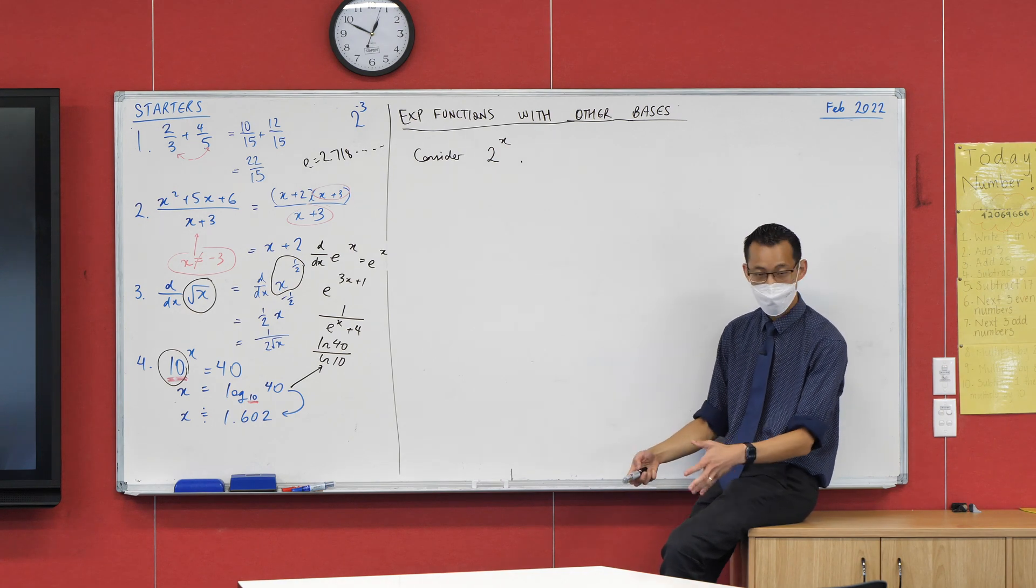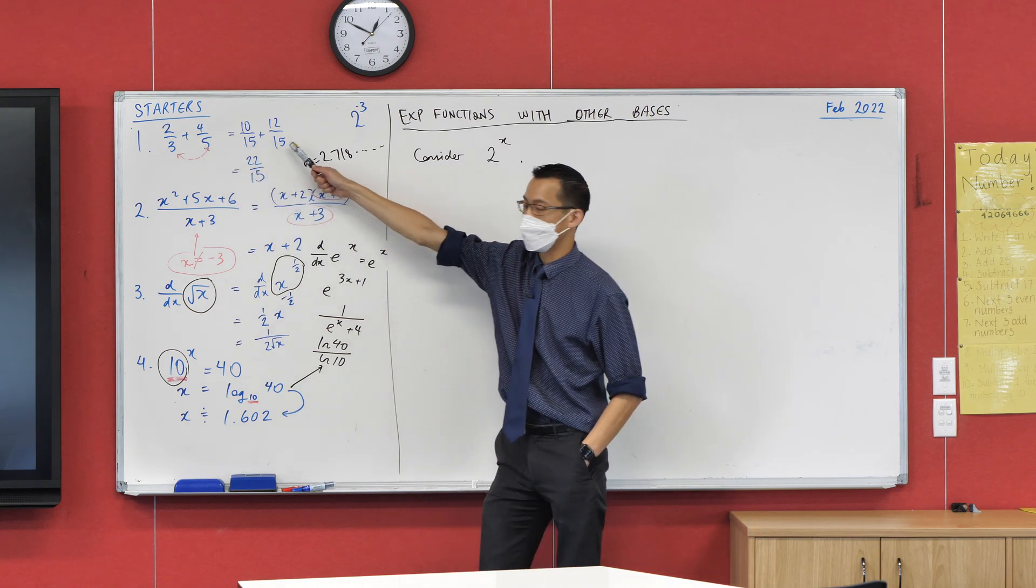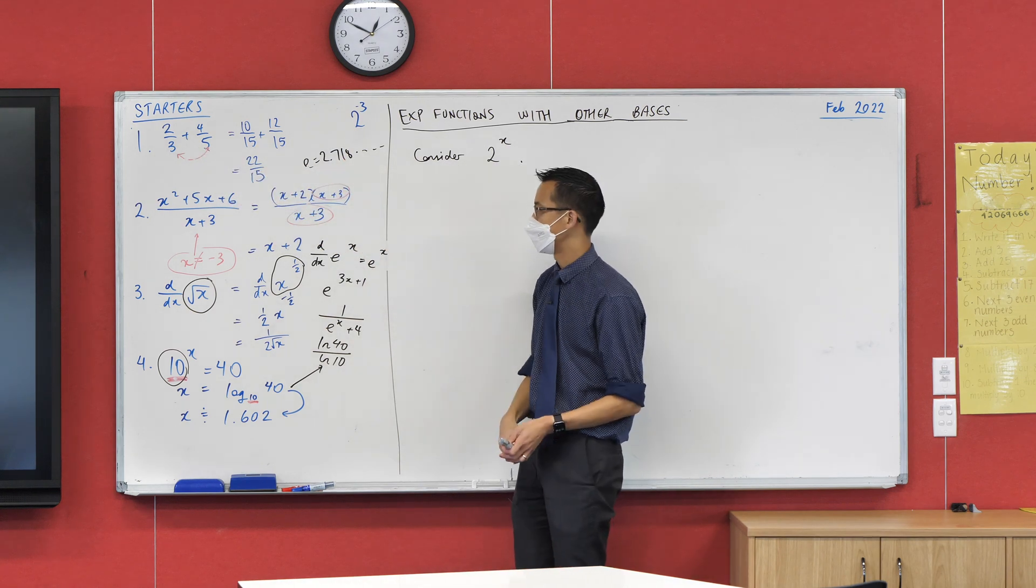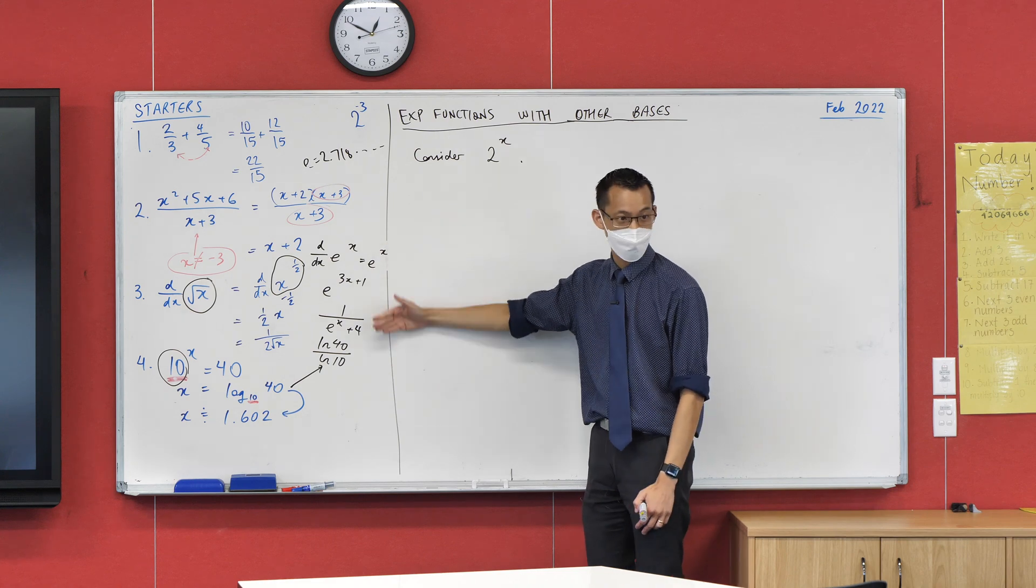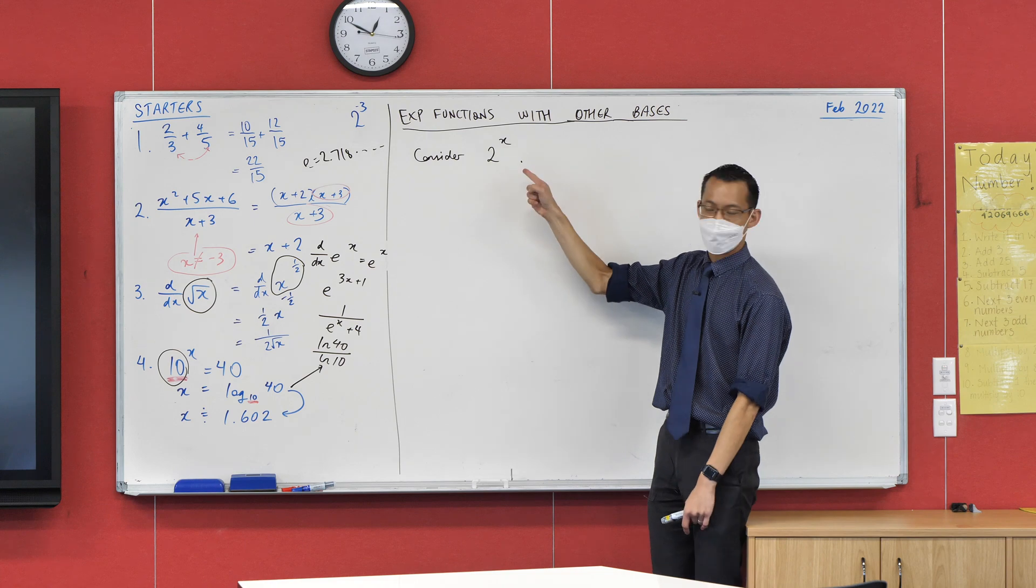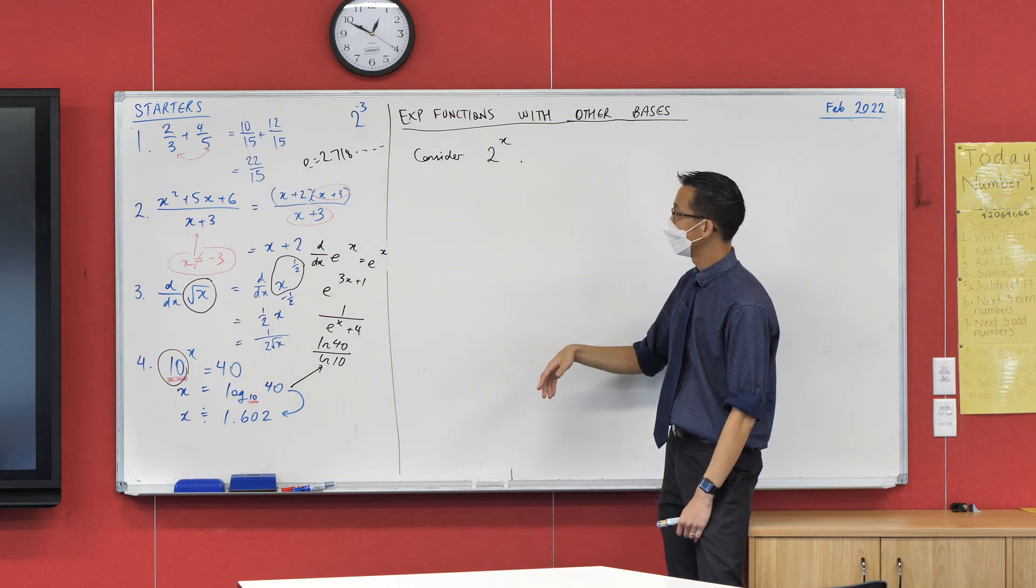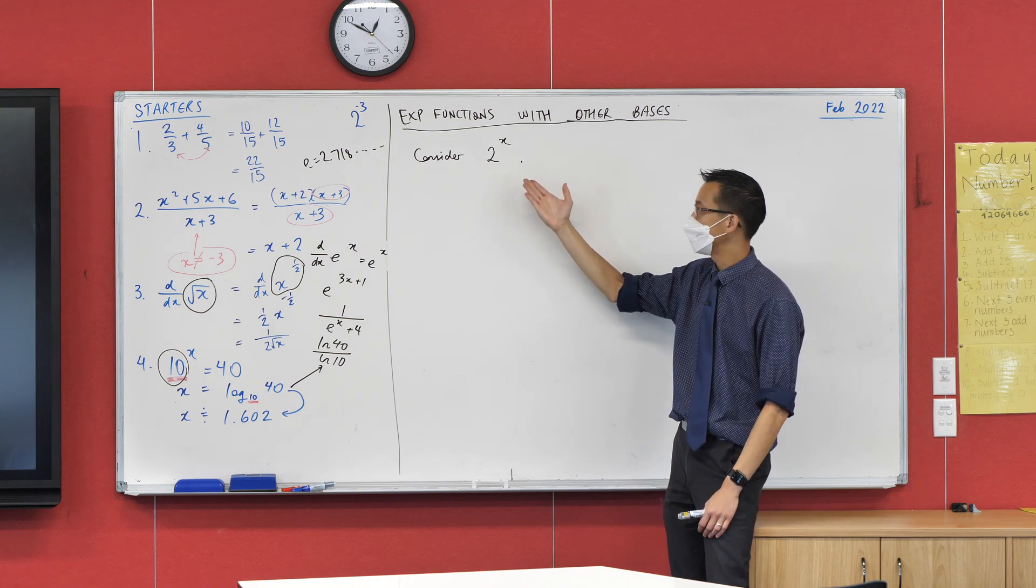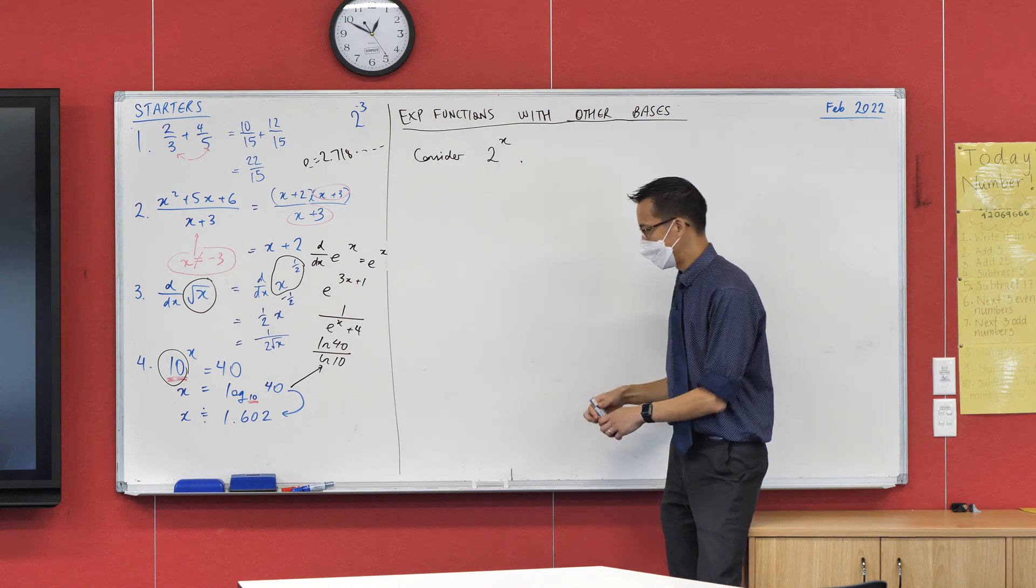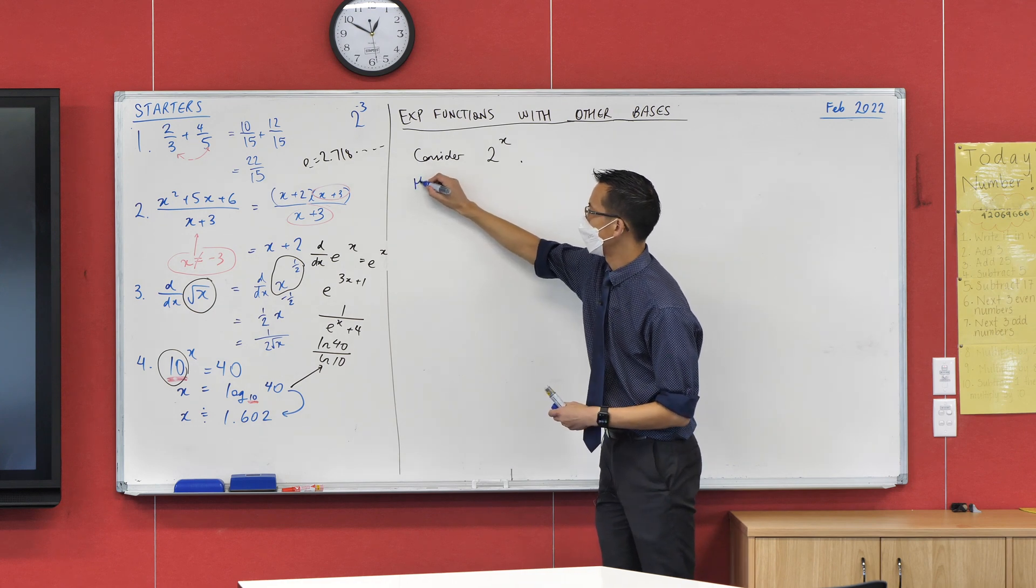Now, in much the same way as you saw, if I can dress up something weird as something familiar, then I can work with it. Can you see, we know how to differentiate when it's e to the power of something. This is not e to the power of something, but if I can make it look like that, then I can differentiate it. So what I want to do is, this is my question.